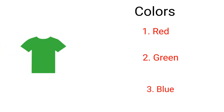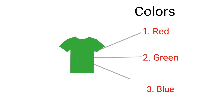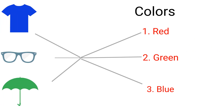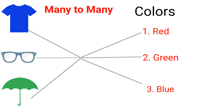Today we're going to be talking about many-to-many relationships. The example we're going to use are products and colors. A product can come in many colors, and a color can also belong to many different products.